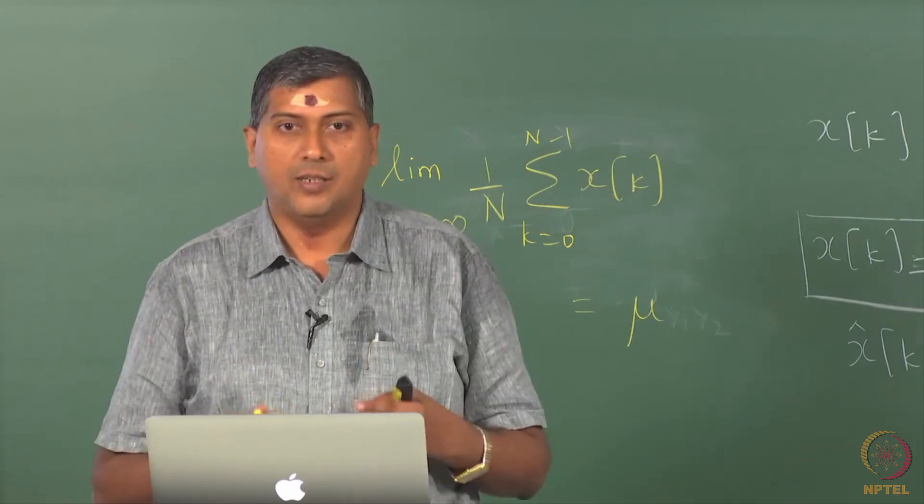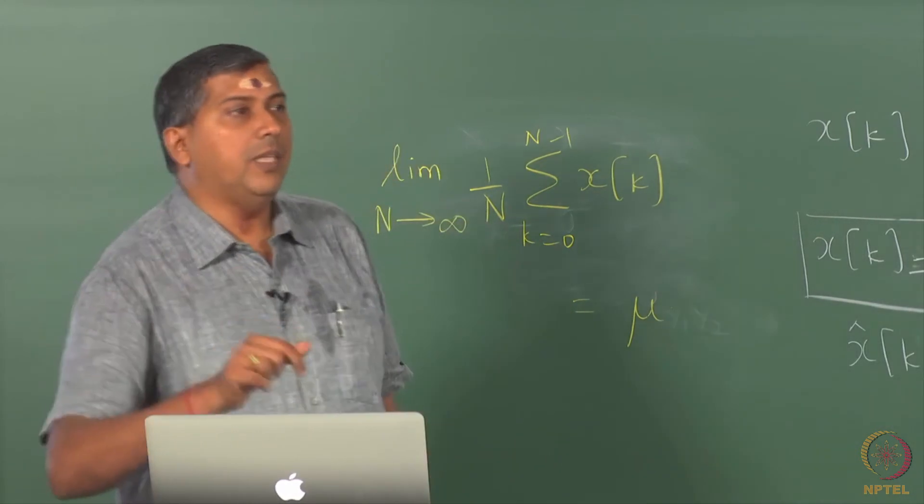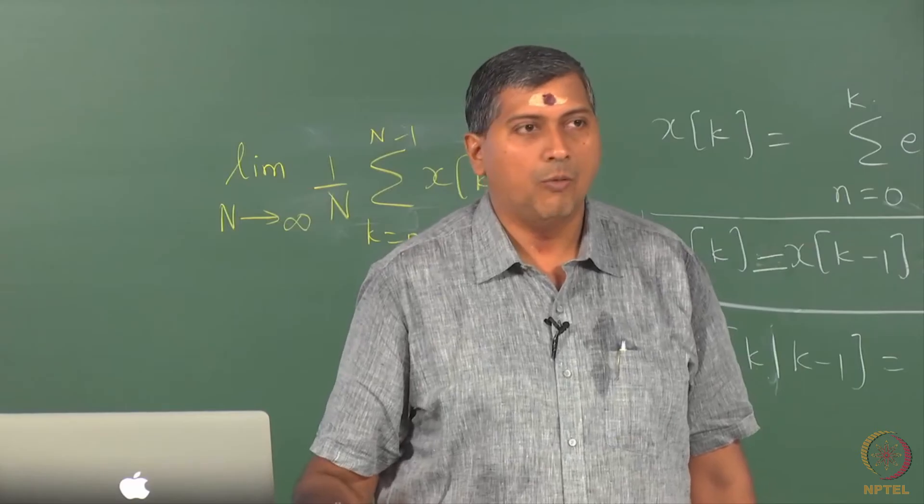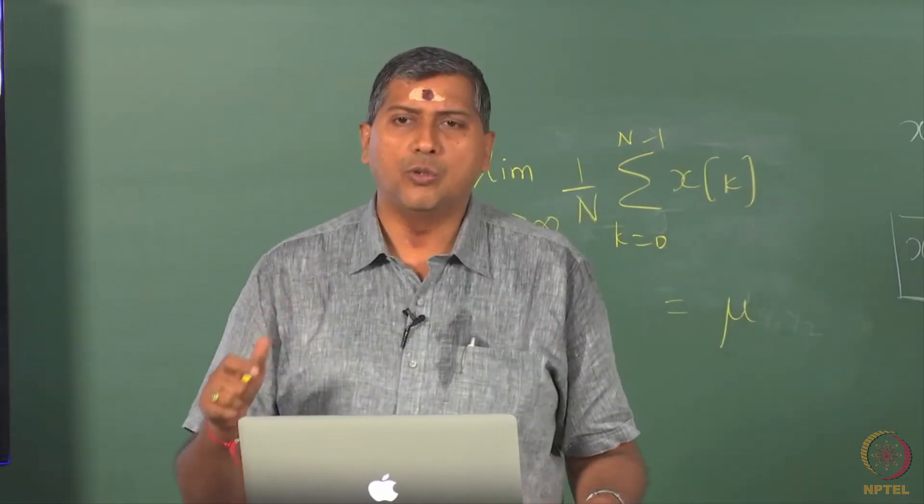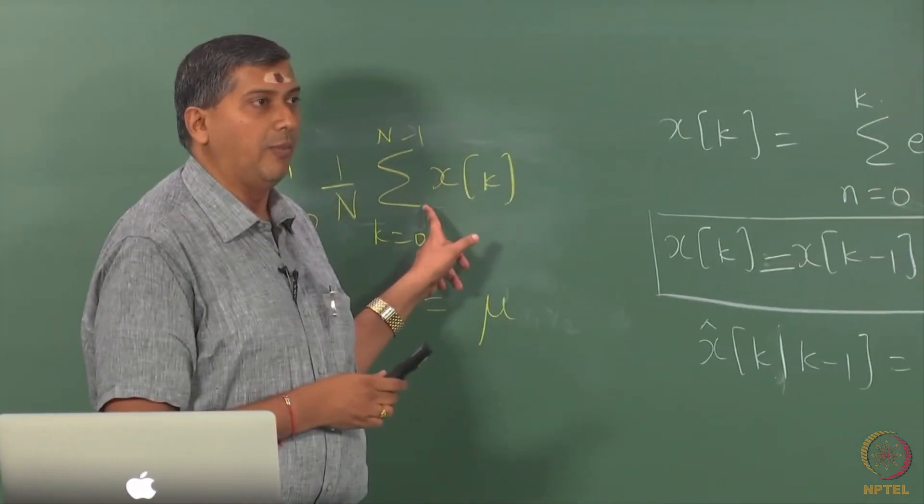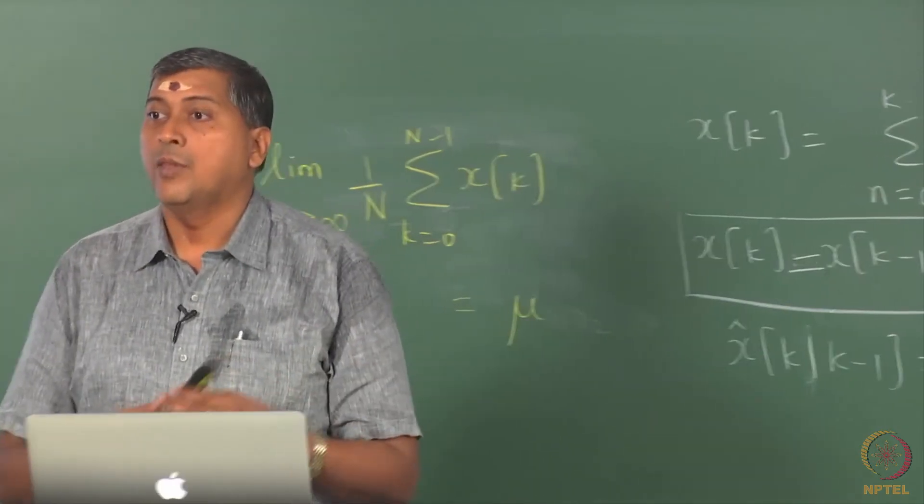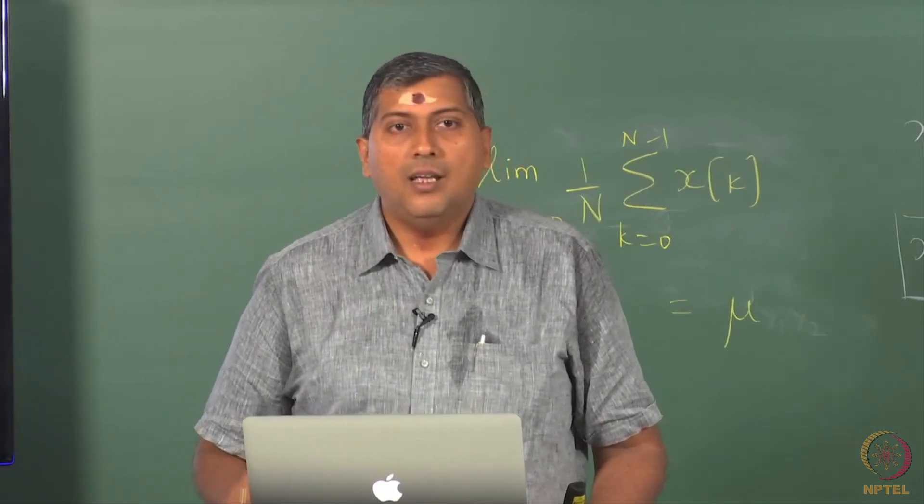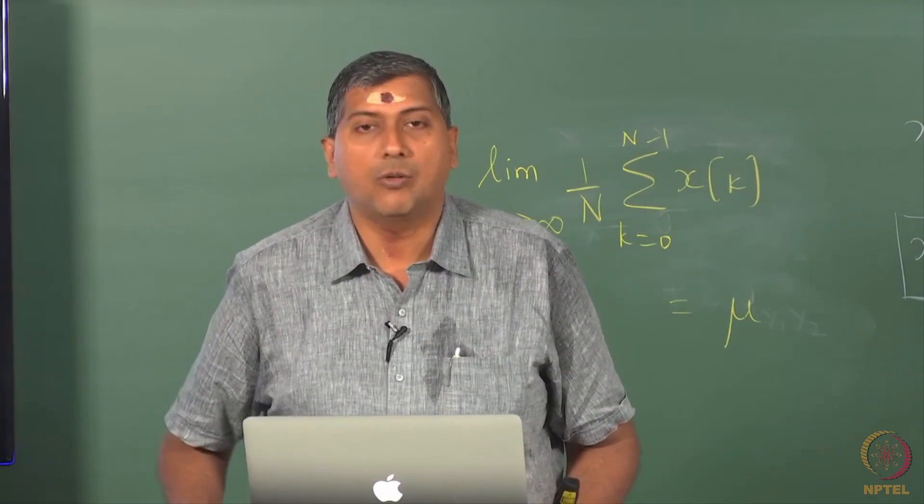But there is something else that I have written there, there is an abbreviation a.s. - almost sure. Why are we talking about this almost sure? The reason is we are now looking at convergence of random numbers or random variables. Xk is not a deterministic variable, it is a random variable. So I am adding up random variables and I am talking of limits of such random variables. And we are asking if the limit of the summation converges to mu, is mu a deterministic quantity or a random one?